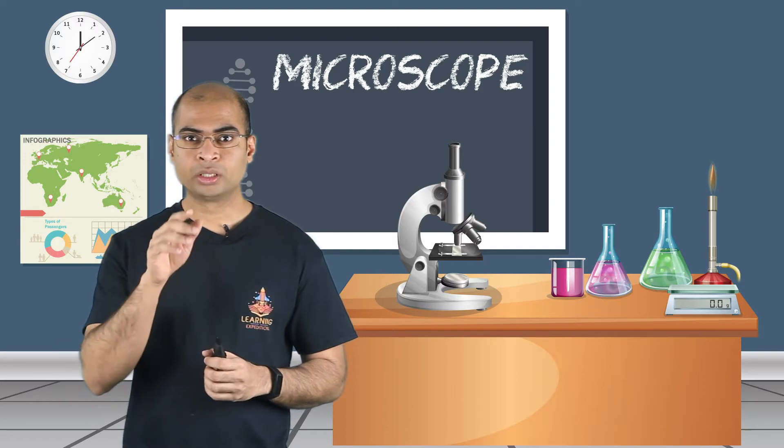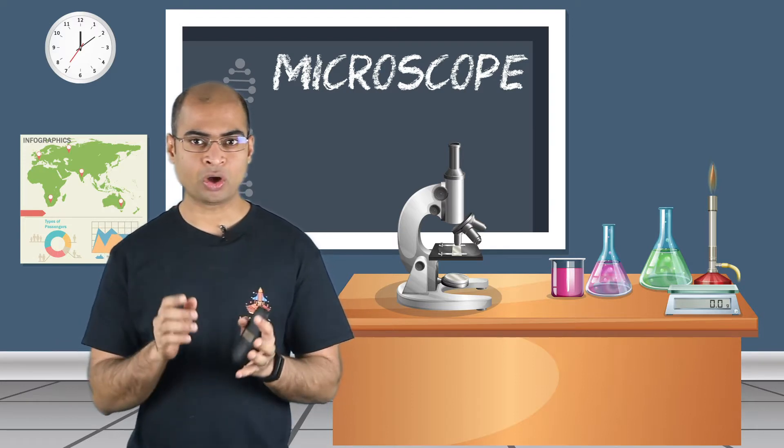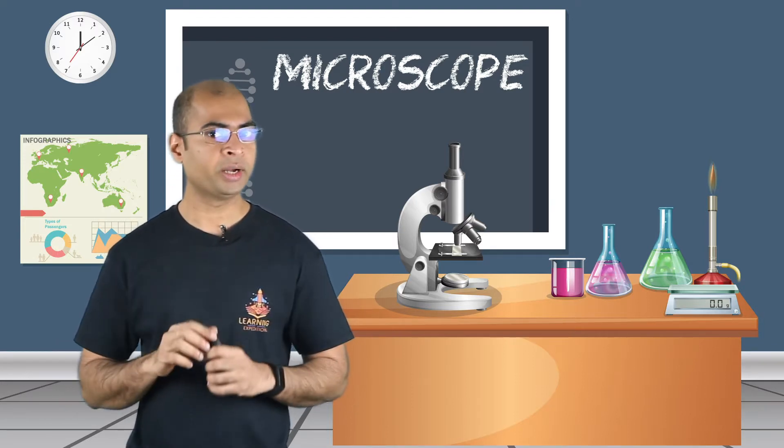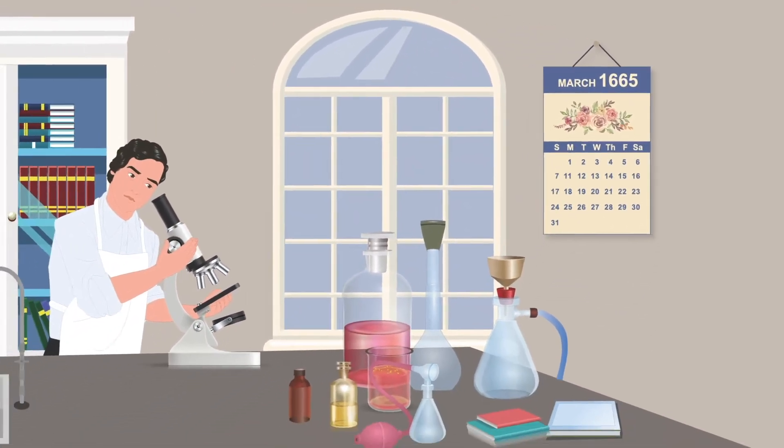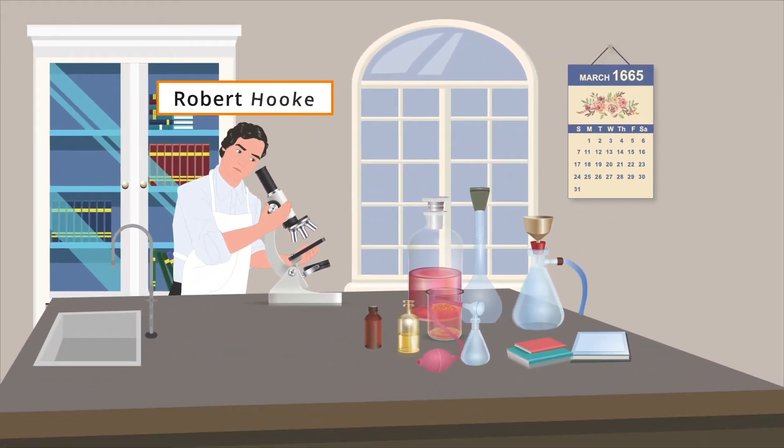In fact, the first time ever anyone saw a cell was under a microscope. The year was 1665. A scientist named Robert Hooke was very fascinated with the microscopic world. And during his explorations, he looked at a piece of cork under a microscope, which is nothing but bark of a particular tree.